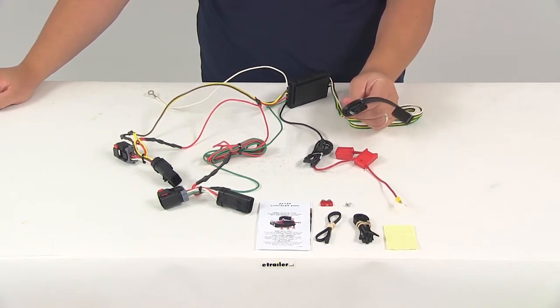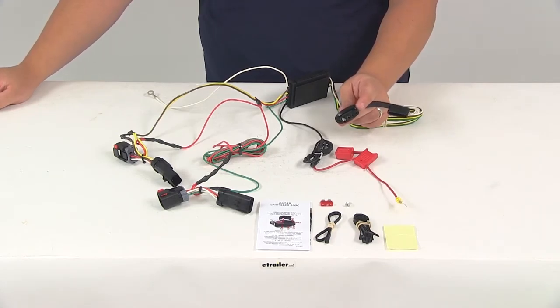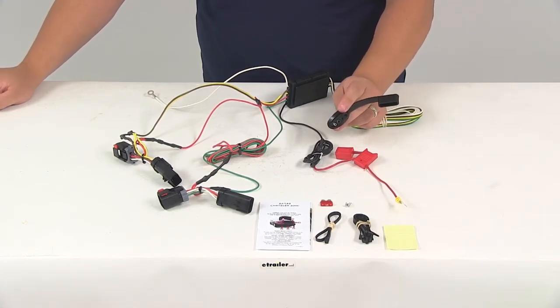This unit is going to provide a four-way flat trailer connector at the back of your vehicle to power your trailer signal lights. It is compatible with five-pole, six-pole, and seven-pole adapters. Those adapters are sold separately.